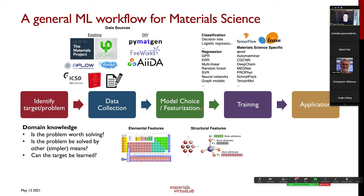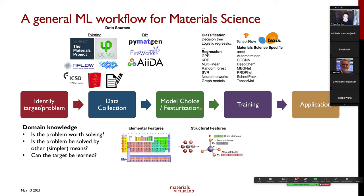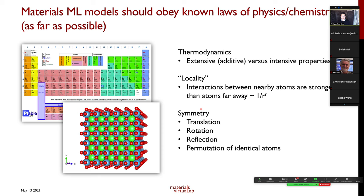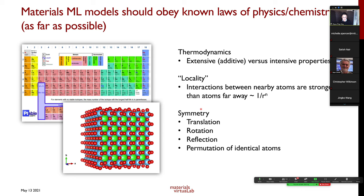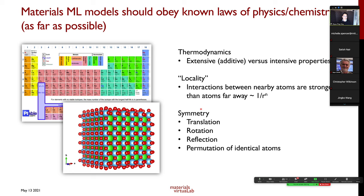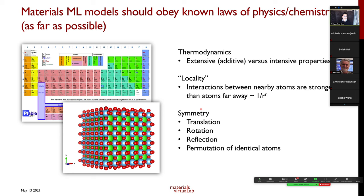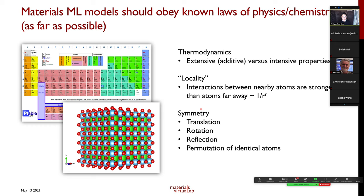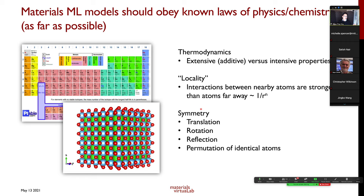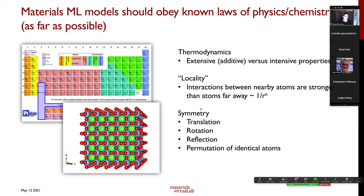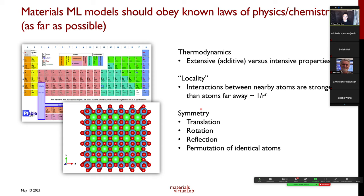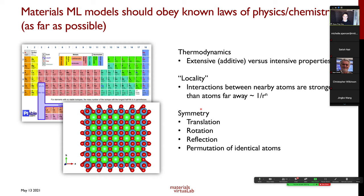When designing features, you must ensure they obey known laws of physics and chemistry. There are inviolable laws: thermodynamics, whether a property is extensive or intensive, locality — atoms that are close by have stronger interactions than those far away — and symmetry. Translating, rotating, reflecting, or permuting atoms of the same type in a crystal should not change the material's property.